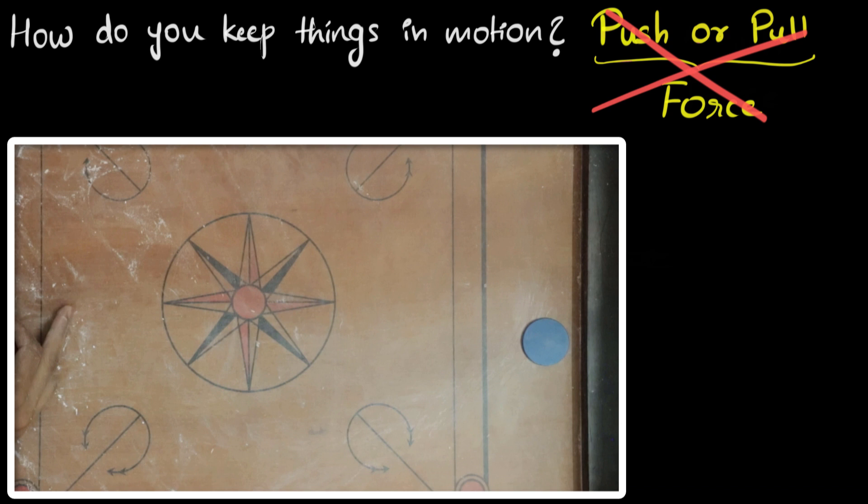This is where a man named Galileo Galilei came up with a crazy idea. He thought that maybe this piece is not stopping because of its natural state. He thought maybe this rough surface is forcing it to stop. Okay, here's what I mean.